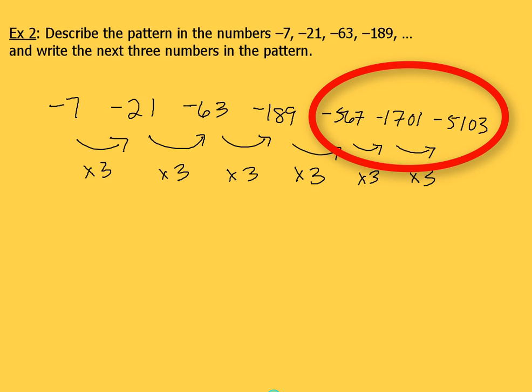So those are our first two examples. Hopefully you can see that pattern that to go from one number to the next each time, you're just multiplying by 3. And that's got to be the same between each digit in our pattern.